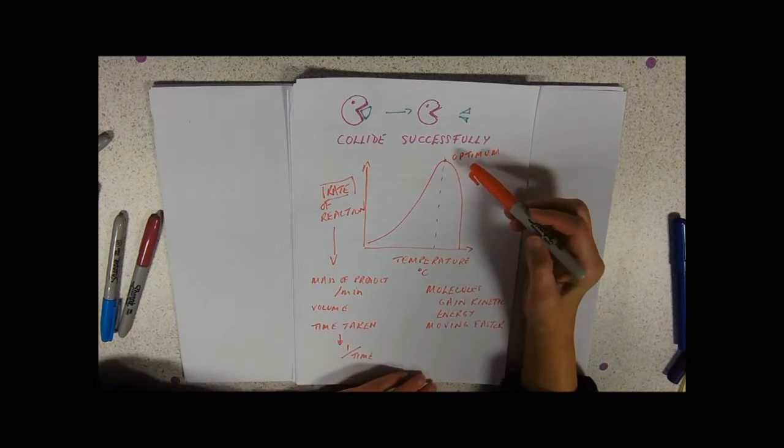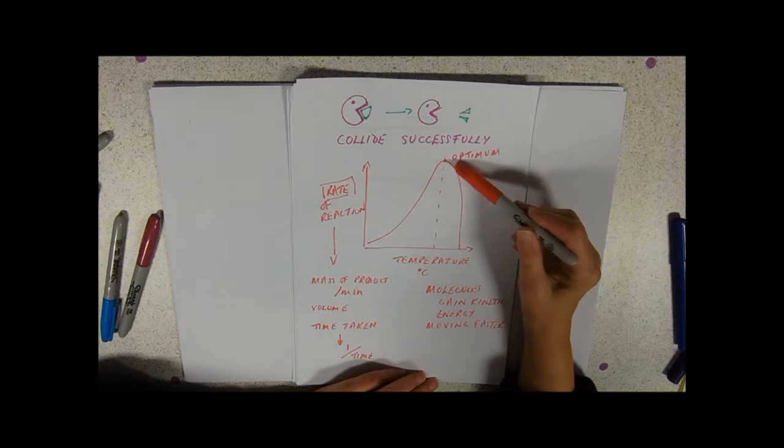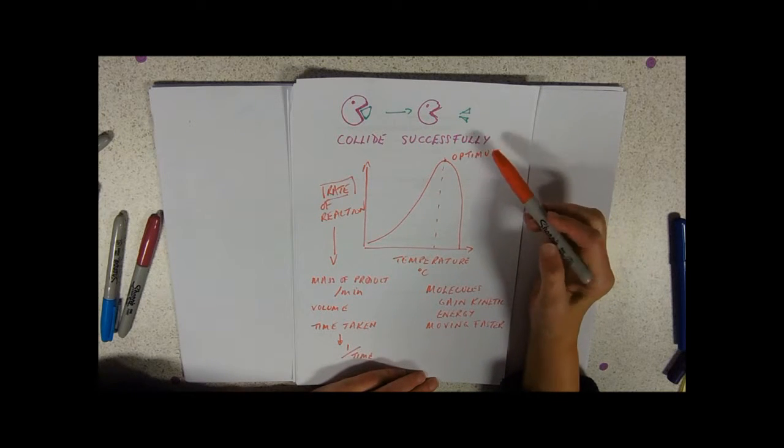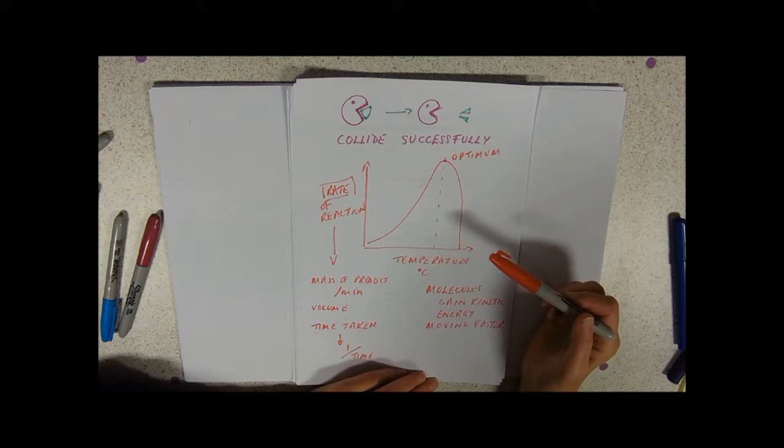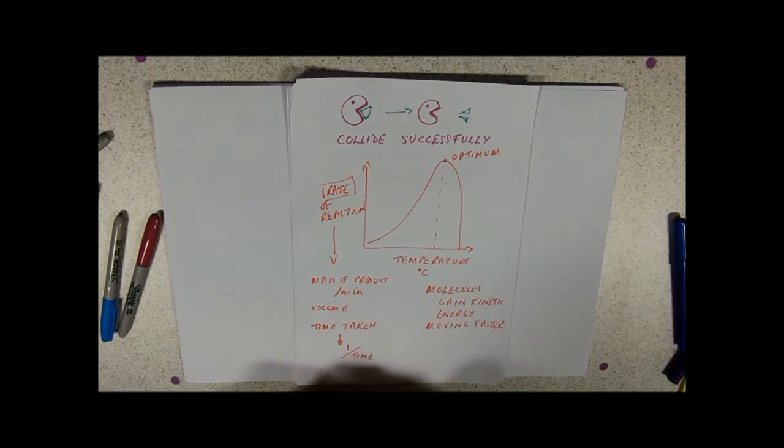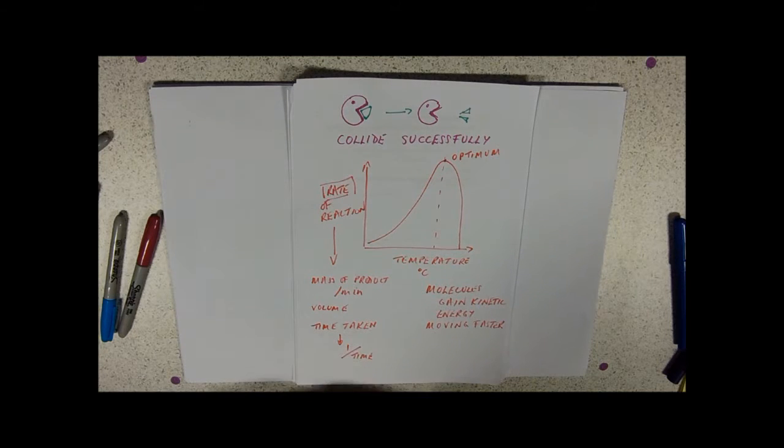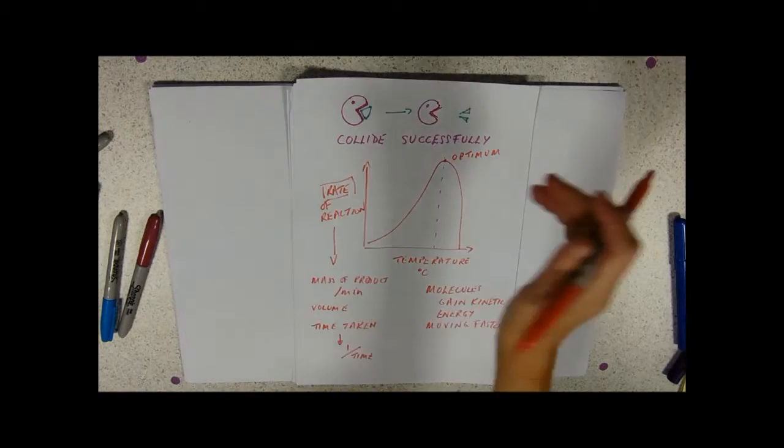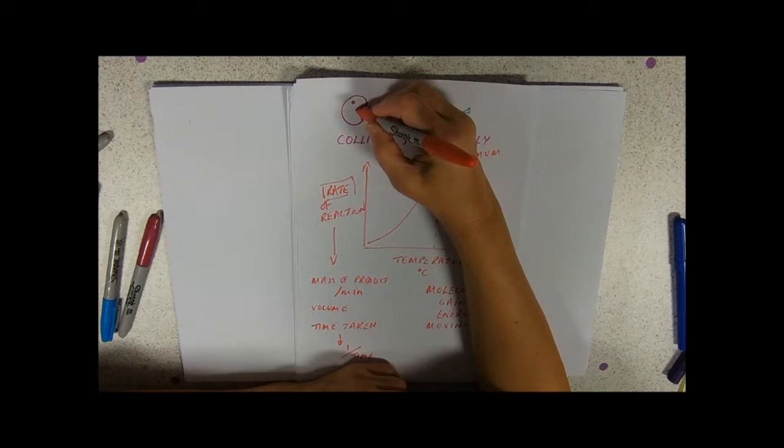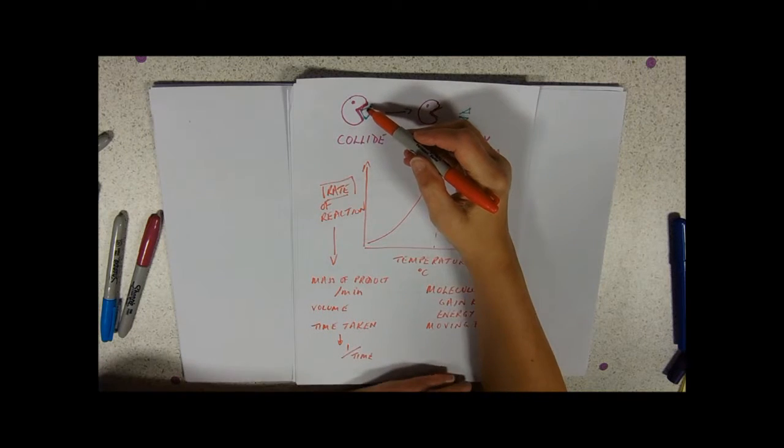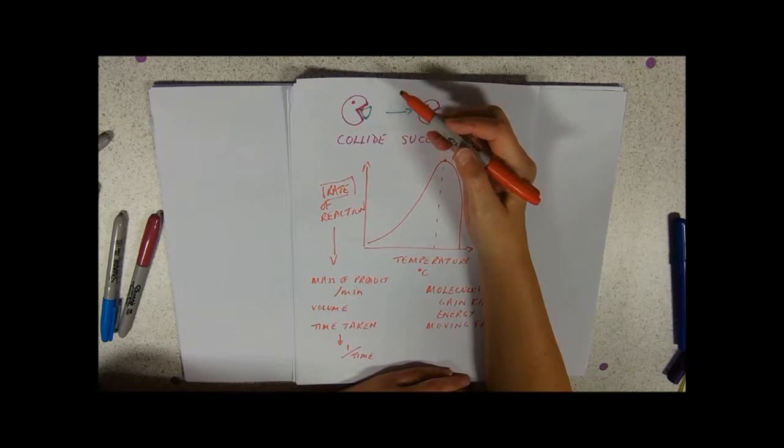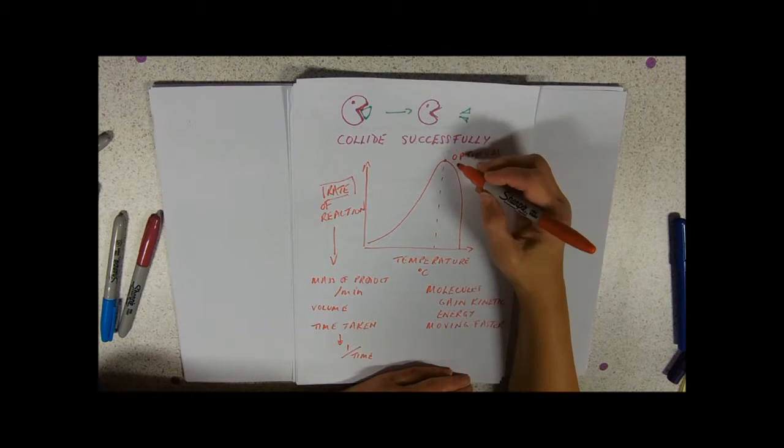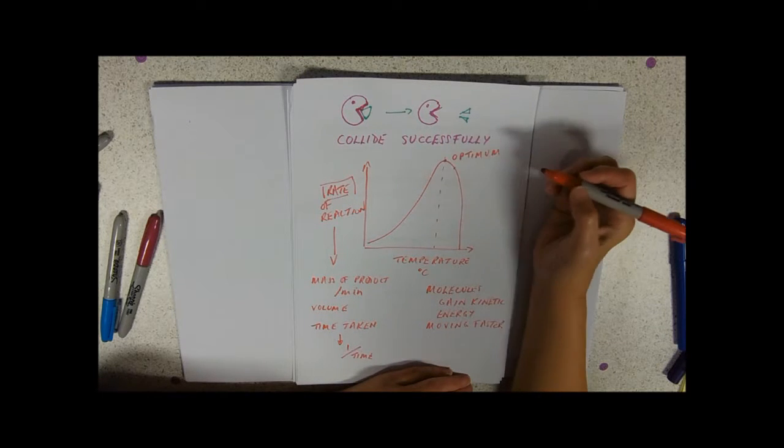So what's causing this decrease in reaction after that optimum temperature is the distortion of the active site. If you can imagine that instead of being this perfectly shaped Pac-Man mouth shape, some of the bonds perhaps holding this upper lip into shape had been distorted. It might still collide, but it won't be as successful, and that will slow it down a bit. And if it's slowed down a bit, obviously the rate has gone down.